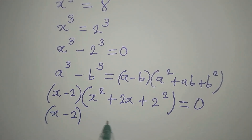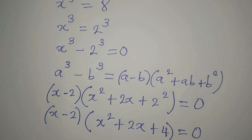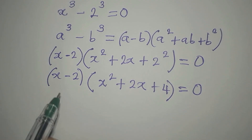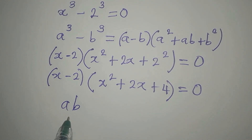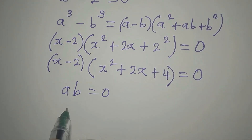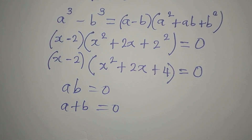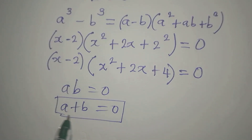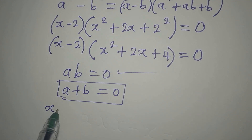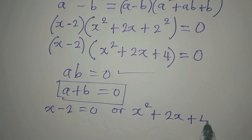x minus 2 is a factor, then x squared plus 2x plus 4 is another factor. So we equate this to 0. Now, we are multiplying these two to get 0. Sometimes students don't know when to apply this rule: if you have a times b equals 0, then it is either a equals 0 or b equals 0. But if you have a plus b equals 0, you cannot say a equals 0 or b equals 0 — it will not work. So we don't apply the zero product rule for addition, only for products. So, x minus 2 equals 0 or x squared plus 2x plus 4 equals 0.